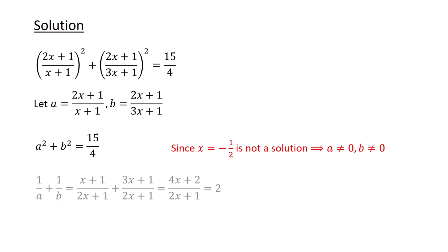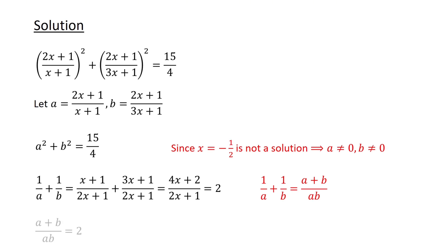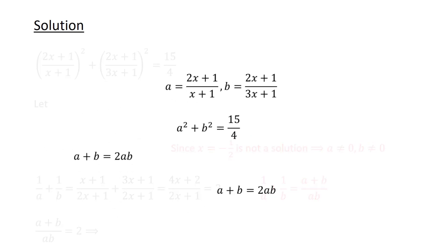The sum of 1 over a and 1 over b is 2. Since 1 over a plus 1 over b is equal to a plus b over ab, we have a plus b over ab is equal to 2, which implies a plus b is equal to 2ab.